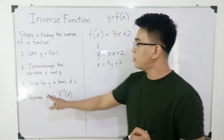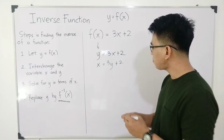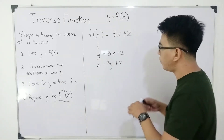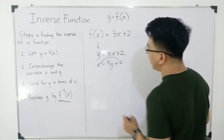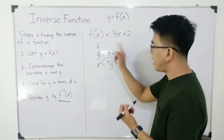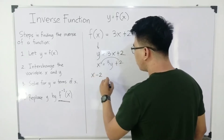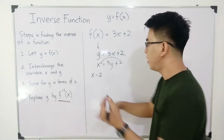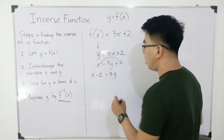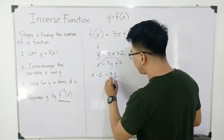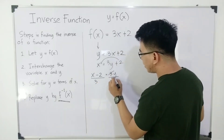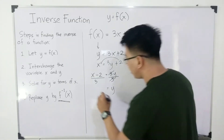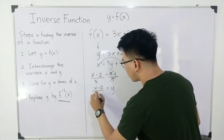Now let's proceed with step number three: solve for y in terms of x. All you need to do is manipulate the equation wherein we need to isolate the variable y. We will transpose 2 to the other side and it will become x minus 2. Remember, when you're transposing a term, it will change the symbol — if this is positive, it will become negative. So we have x minus 2 equals 3y. We can still divide both sides by 3. Cancel out, because 3 divided by 3 is 1. So we have y equals x minus 2 over 3.